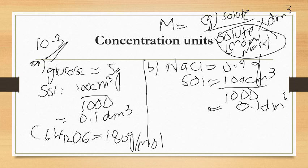Whereas the molar mass for sodium chloride will be equal to 58.5 grams per mole. This is the molar mass of NaCl — 58.5 grams per mole. Now we substitute values into the formula.